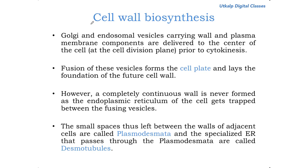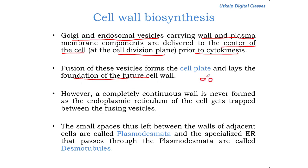How is the cell wall synthesized? During cytokinesis, Golgi and endosomal vesicles carrying cell wall components and plasma membrane components are delivered to the center of the cell — the cell division plane — just prior to cytokinesis. Fusion of these vesicles delivered at the cell plate lays the foundation of the future cell wall. This structure is called the cell plate.